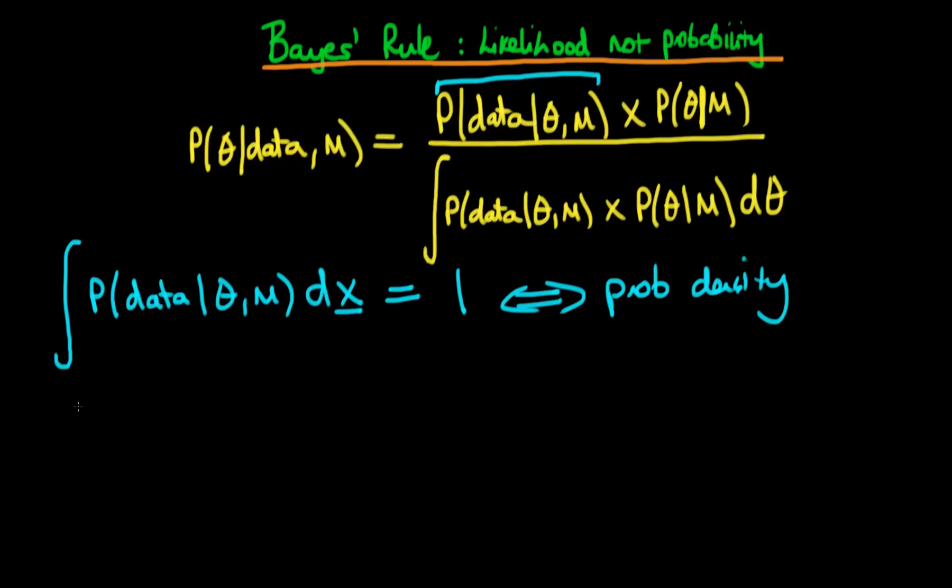That's not normally what we assume in Bayesian inference. Normally in Bayesian inference we assume that the thing that varies is the parameter theta. So what we do is we define something which I'm calling L of theta, which is assuming that the data is fixed and the choice of model is also fixed.